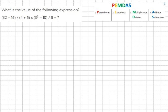What is the value of the following expression? 32 minus 16 over 4 plus 5 times 3 squared minus 10 over 5.